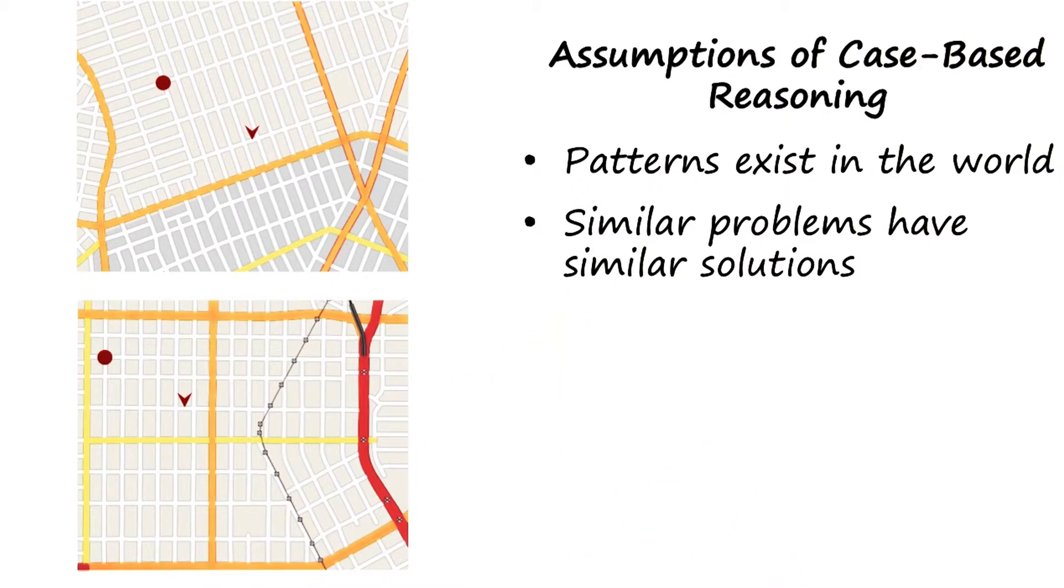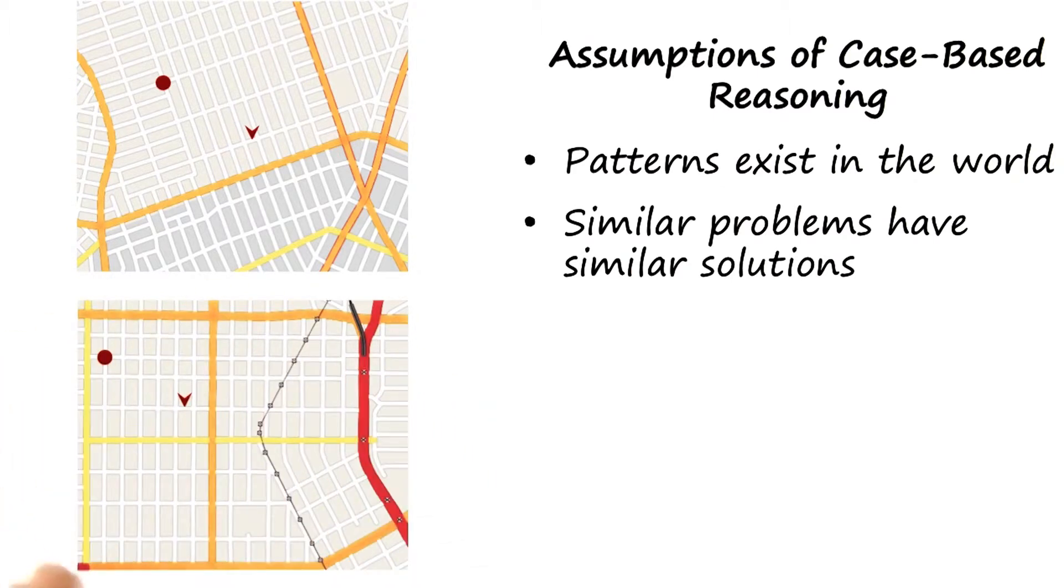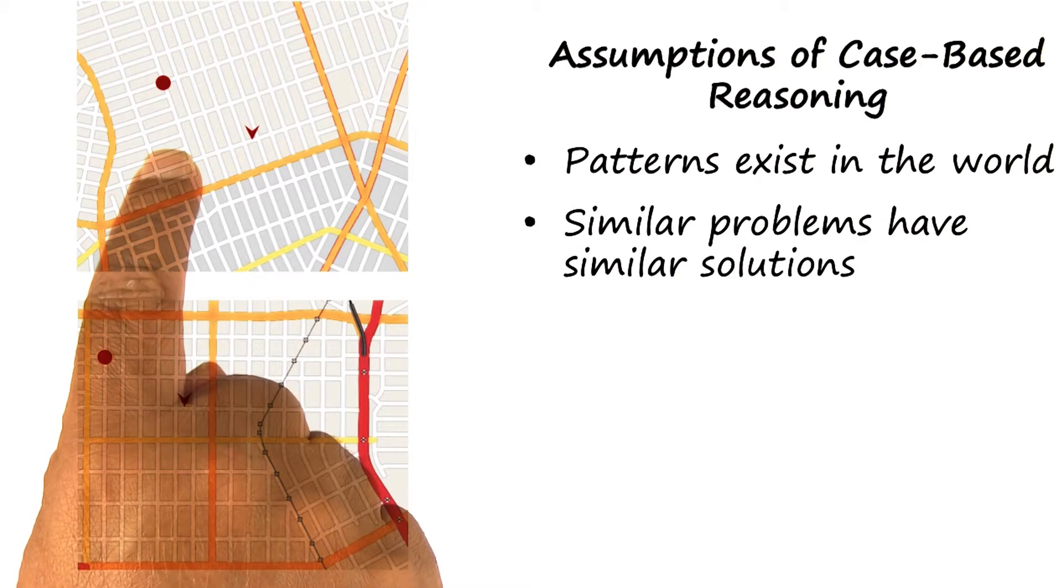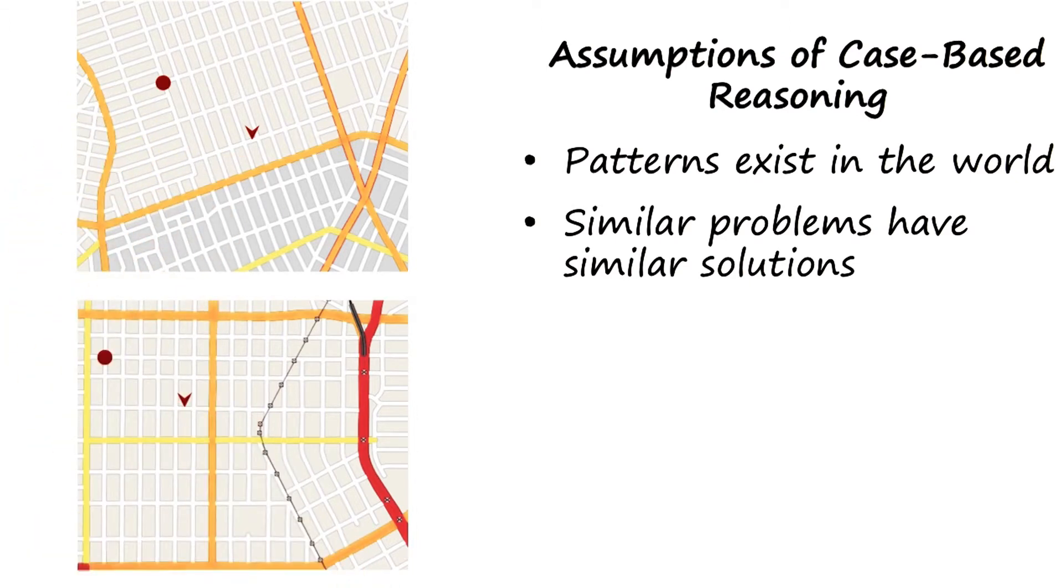Second assumption is that similar problems often have similar solutions. Here is a grid of a part of Long Island. Here is a grid of part of Dallas, Texas. Now if you look at the one in Long Island, you can see that if there are two problems which are very close to each other, they are likely to have very similar solutions. And the same is true for the grid in Dallas.